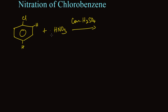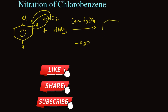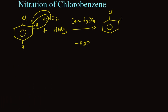For convenience, I am splitting nitric acid as HONO2. If the reaction takes place in the ortho position, the hydrogen from the ortho position of chlorobenzene and OH from the nitric acid will leave as H2O. This NO2 replaces the hydrogen in the ortho position, so we get chlorine and NO2 — the name of this compound is 1-chloro-2-nitrobenzene.